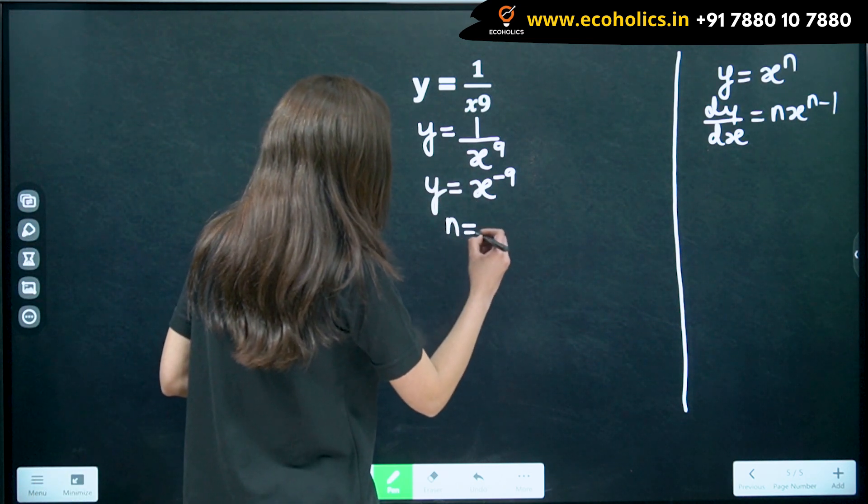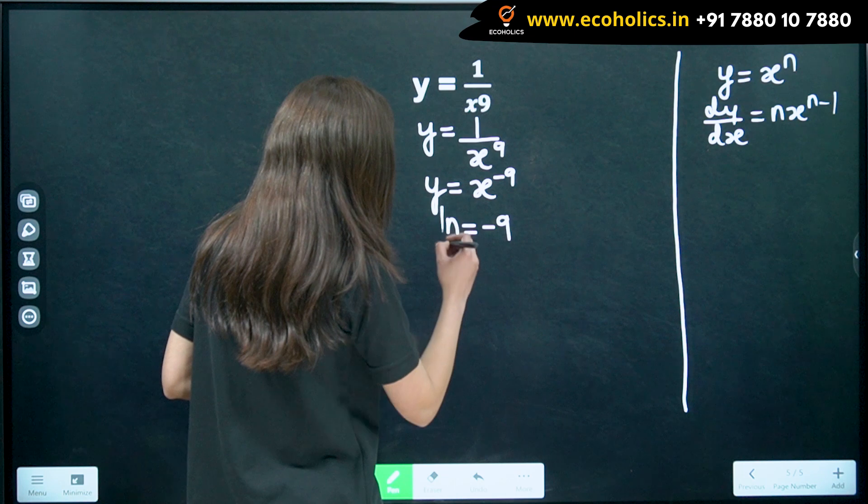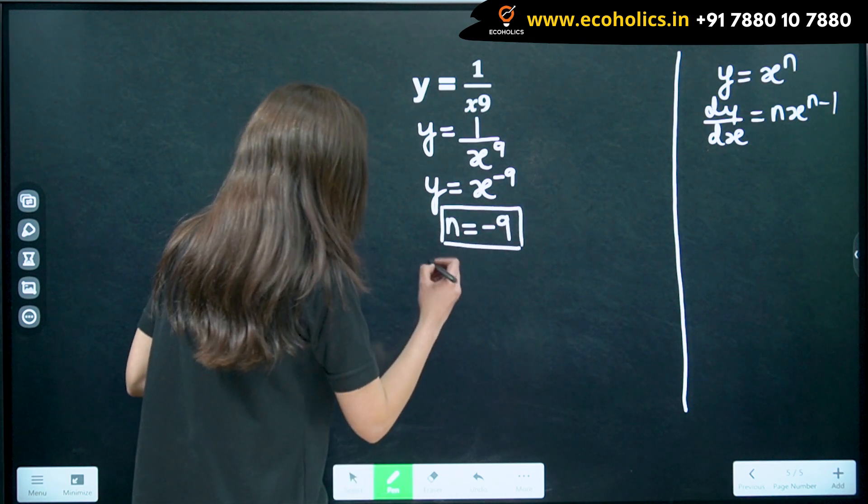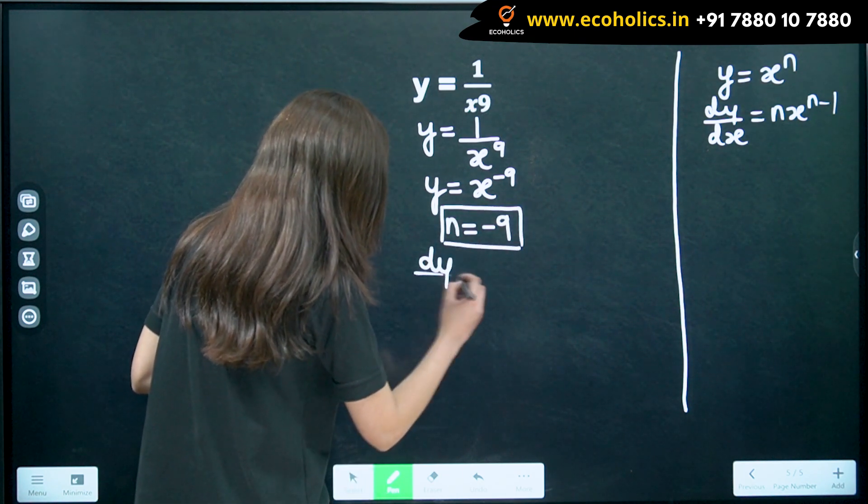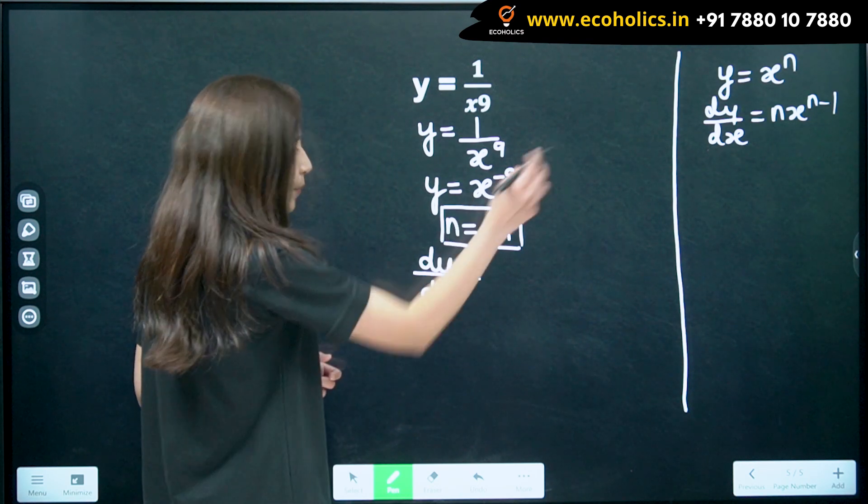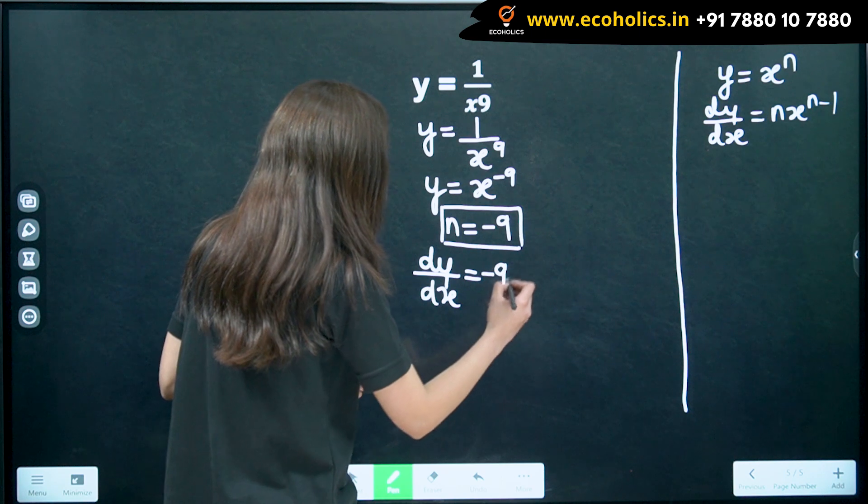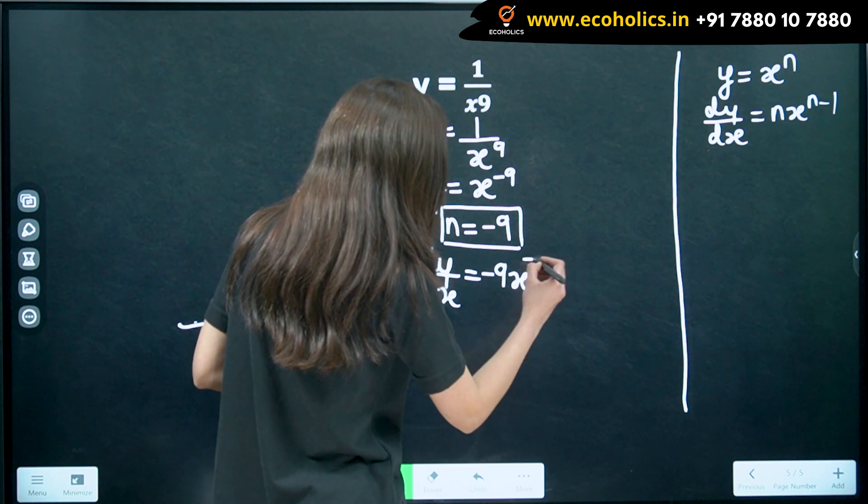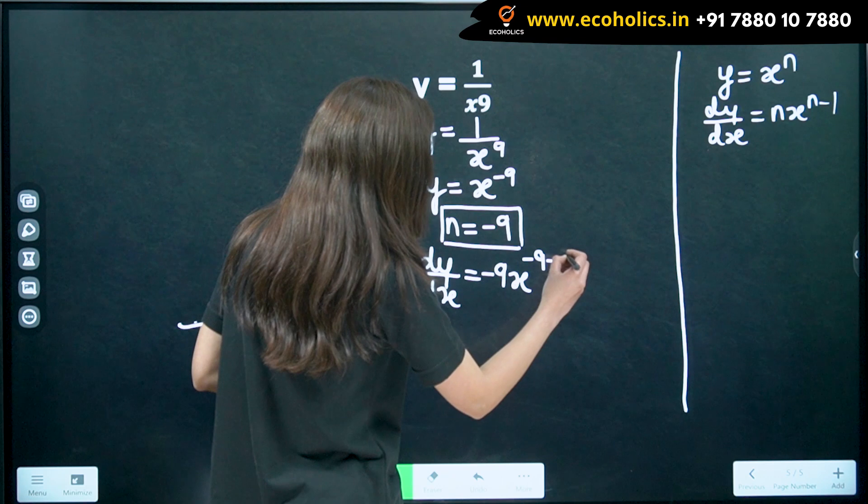So, we have n is equal to minus 9. So, dy by dx in this case is equal to minus 9 x raised to minus 9 minus 1.